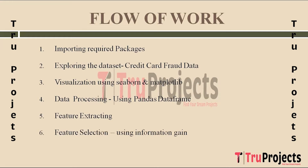In the feature selection step, information gain is applied as a technique to choose the most informative features, improving model accuracy and efficiency. The next step is the train/test split, where we segregate the dataset into training and testing subsets. The training subset is used for model learning, while the testing subset evaluates the model's performance on new data.